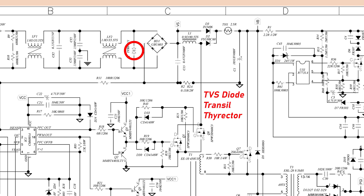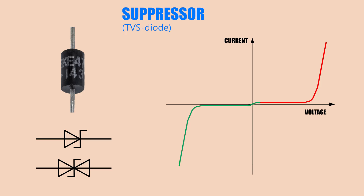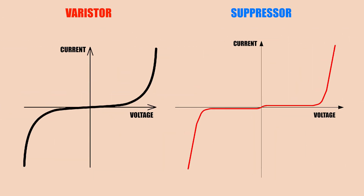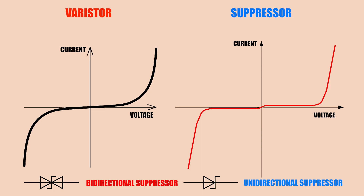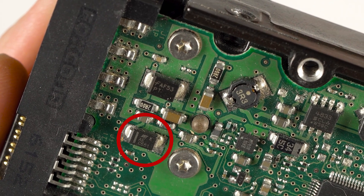The TVS diode is also called a transient suppressor, transzorb, or thyrectar. It works kind of like a Zener diode. In the forward direction, it's just a diode. In reverse direction, it conducts when voltage exceeds a certain threshold. But unlike Zeners, which increase current gradually, a TVS diode switches almost instantly and its internal resistance drops to almost zero. TVS diodes protect gear from voltage spikes just like varistors, but TVSs react faster. TVS diodes can also be bidirectional for AC lines, or unidirectional like Zeners for DC only. In hard drives, you'll find low-voltage suppressors — one on the +5V rail and one on the +12V rail.